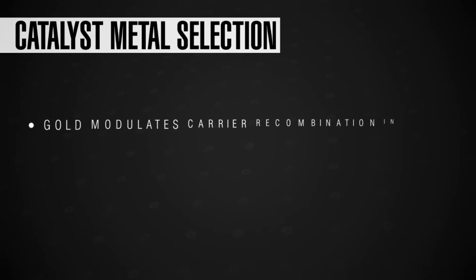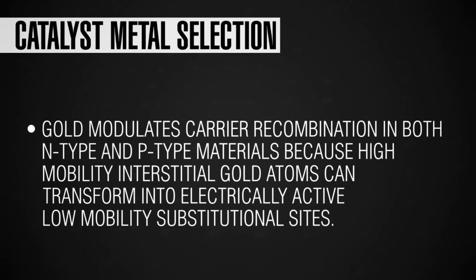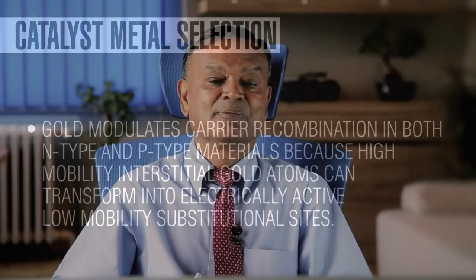Now, let's talk about the catalyst metal. When you look at the literature, gold will be the choice in most of the publications. But gold is not really desirable, particularly in semiconductor manufacturing, because gold happens to modulate carrier recombination in both n-type and p-type materials. Gold atoms can actually transform into electrically active low-mobility substitutional sites. So in that sense, it's preferable to look for alternatives to gold to grow a variety of nanowires.